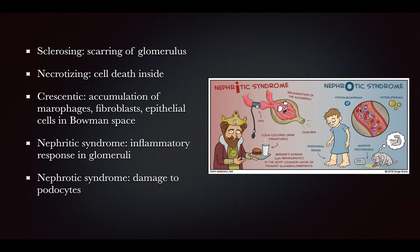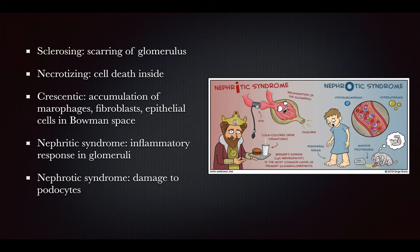Nephrotic syndrome results in hypoalbuminemia, which leads to peripheral edema because albumin normally maintains oncotic pressure and pulls fluid back in. There is also hyperlipidemia because without adequate oncotic pressure, more lipids accumulate in place to try to maintain osmotic balance. This doesn't work because massive proteinuria continues, causing lipids to accumulate in the blood, leading to atherosclerosis.